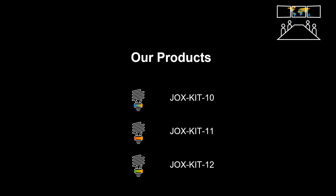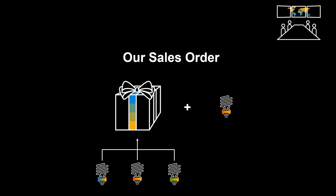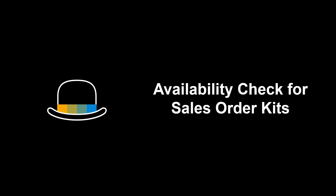Our scenario is the following. We have three products: JOX Kit 10, JOX Kit 11, and JOX Kit 12. They are all part of a product bundle. Our customer will order one product bundle. The customer will also buy a separate line item of our product JOX Kit 11. Now let's dive into the system.